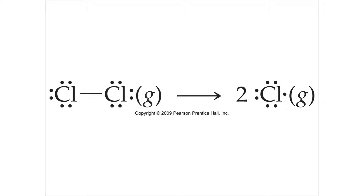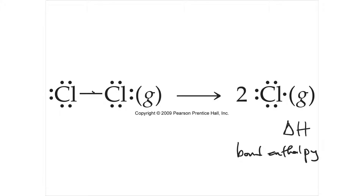How much energy is required or released to break a bond, and how much energy is required or released to then form a new bond — that is bond enthalpy. Remember, enthalpy is delta H. Bond enthalpy is represented by the capital letter D, and it's the energy released or required to break a bond.